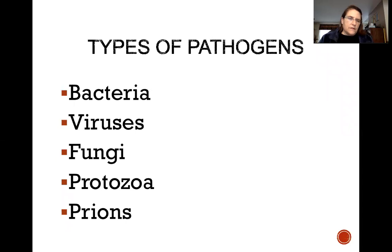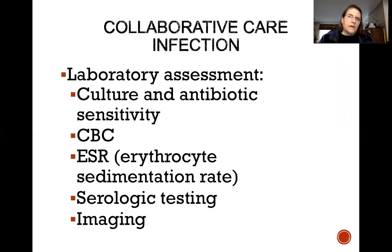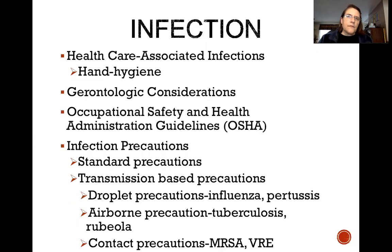We have different types of pathogens. Some of the more common ones are bacteria, viruses, fungi, protozoa, and prions. There are a couple of ways we look at things and try to diagnose. We might do a laboratory assessment — a culture and antibiotic sensitivity, a CBC to see how the body's trying to fight it, an erythrocyte sedimentation rate or sed rate, serological testing, and imaging.